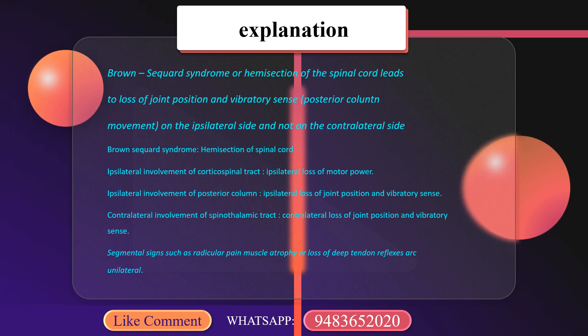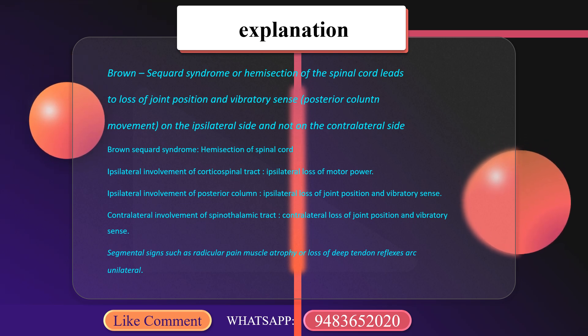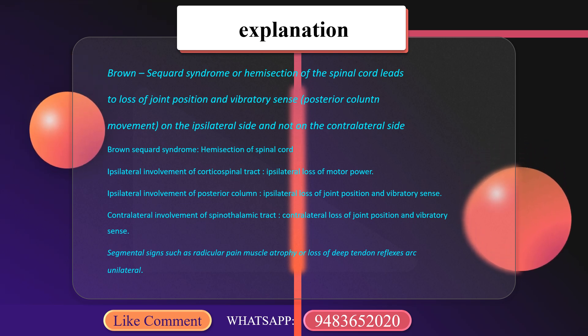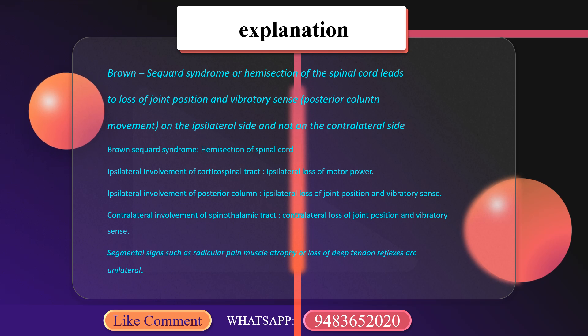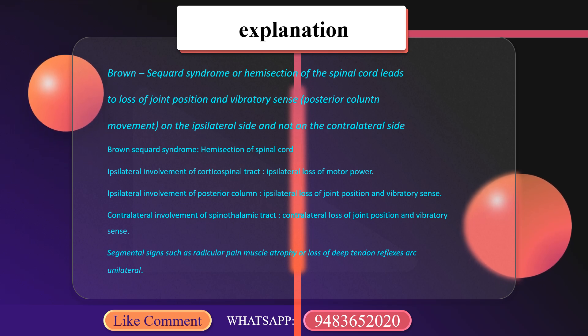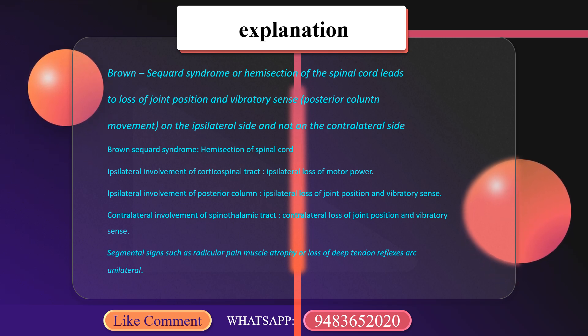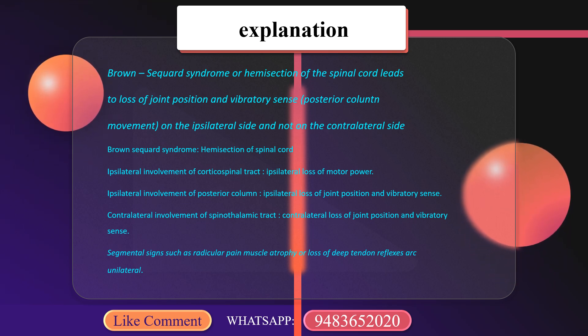Additional features include contralateral loss of pain and temperature sensation, segmental signs such as radicular pain, muscle atrophy, and loss of deep tendon reflexes.